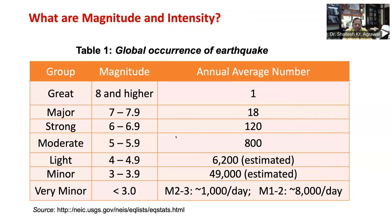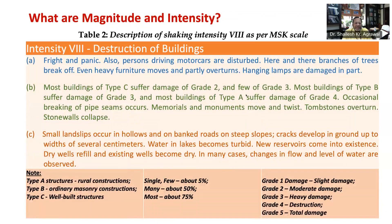Let's look at this table, which shows that depending upon magnitude, earthquakes are often classified into different groups. Earthquakes having magnitude more than 8 are called great earthquakes, while those with magnitude 5 to 5.9 are called moderate earthquakes. This table also gives the annual average number of earthquakes occurring across the earth — on average, one great earthquake of magnitude 8 or higher occurs each year.